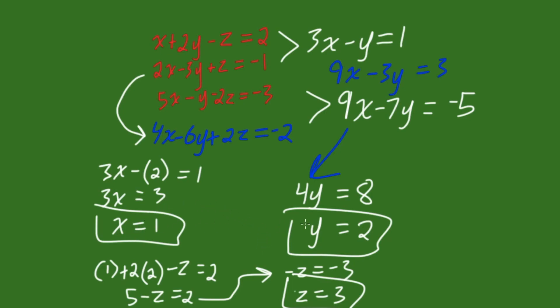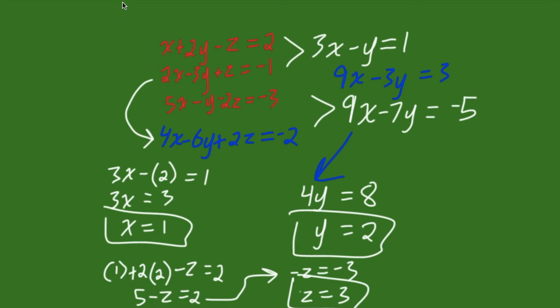And, we have now found x, y, and z. So, the final thing we have to do is write our answer. And, when you're writing your answer, you want to write it as x, y, z to show the order.